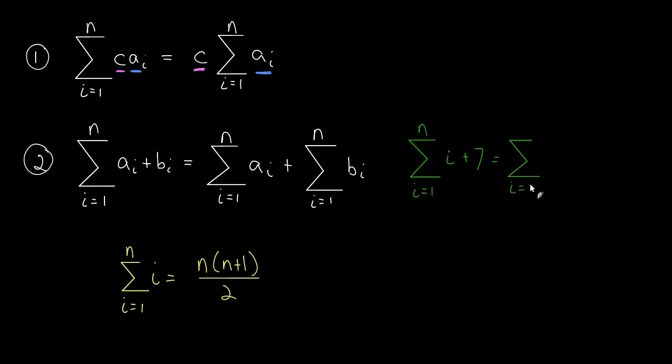The sum as i goes from 1 to n of i, plus the sum as i goes from 1 to n of 7. Now we do have explicit formulas for this. Here this is, I'll just call this formula A. And we also have formula B, which says that the sum of a constant is just n times that constant. We have these two formulas, so we'll use them both.